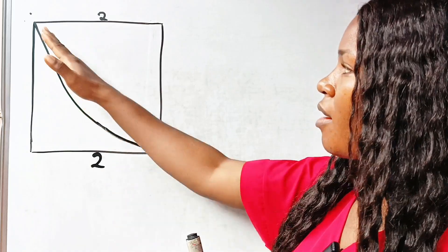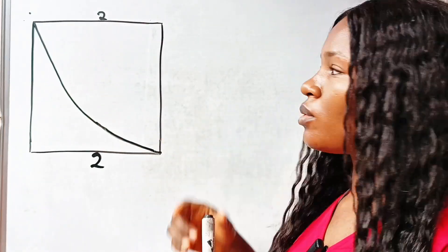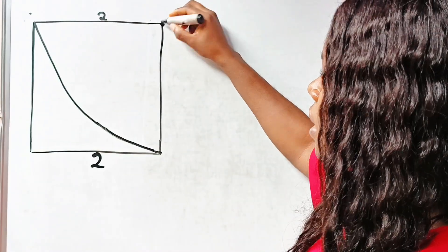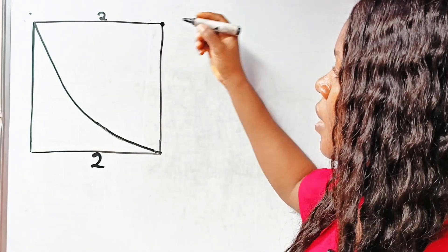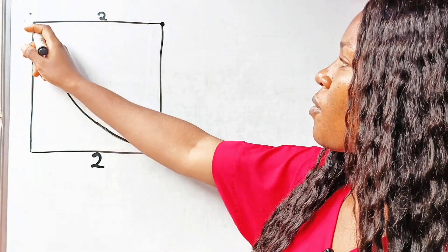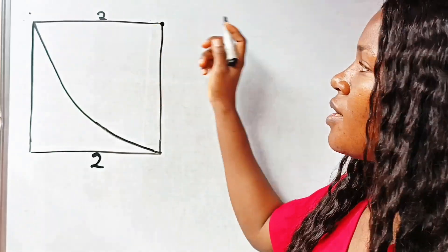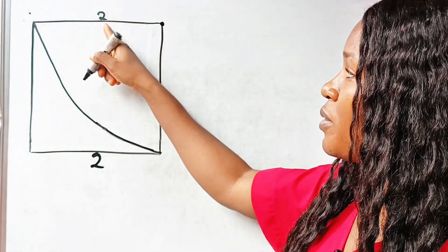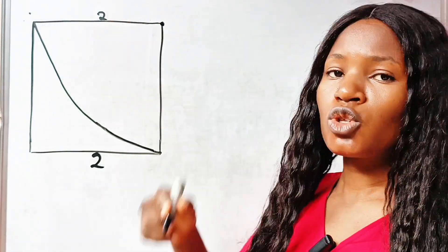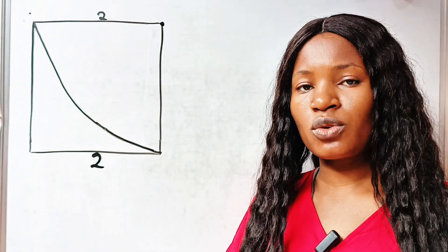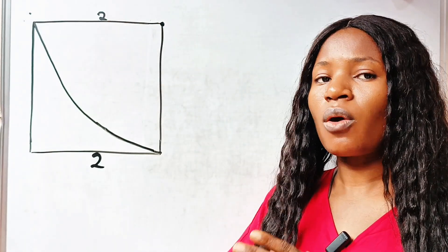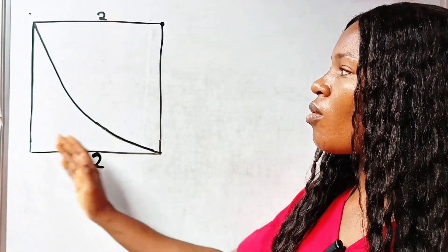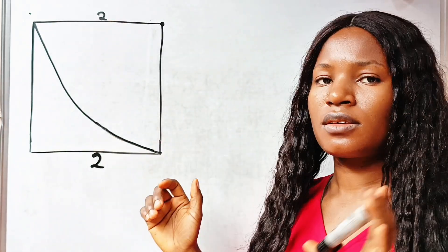Okay, so here we have a quarter circle with center here, and you can see that from here to here is its radius, meaning that it has a radius of two units, which is equal to the side of the square.